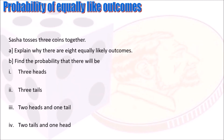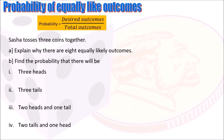Now solve the next problem on your notebook, then come back to check your work. Sasha tosses three coins together. Explain why there are eight equally likely outcomes, and find the probability of: three heads, three tails, two heads and one tail, and two tails and one head. When explaining, it is good to use diagrams, tables, or calculations. We will list all possible outcomes in a table, then find the probabilities using desired outcomes divided by total outcomes.